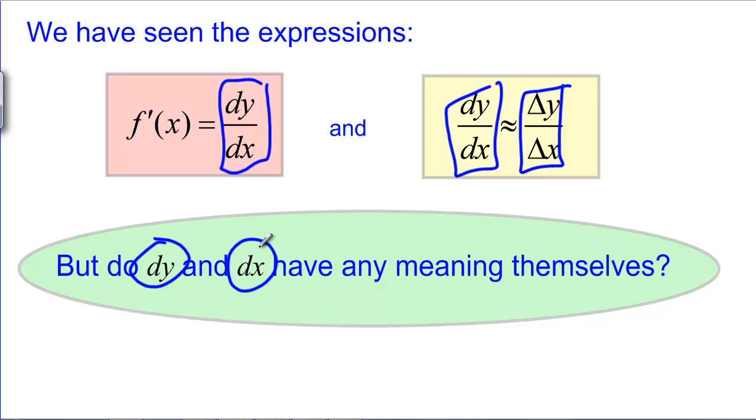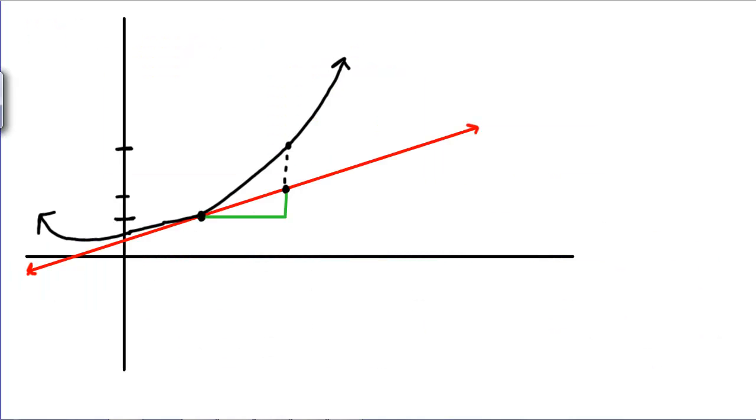It turns out that we can talk about them having meaning. You can almost think of them as infinitely small changes in y's and changes in x, but in the context of linear approximation, we can be even more specific about what we mean by dy and dx.